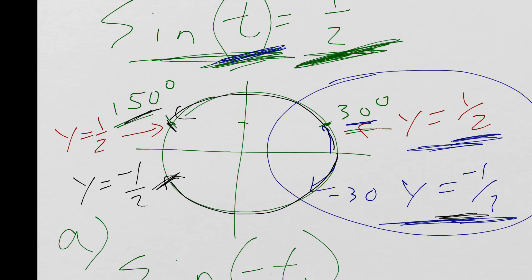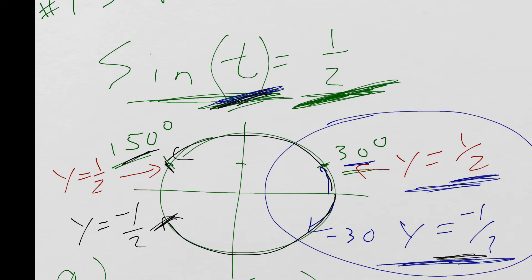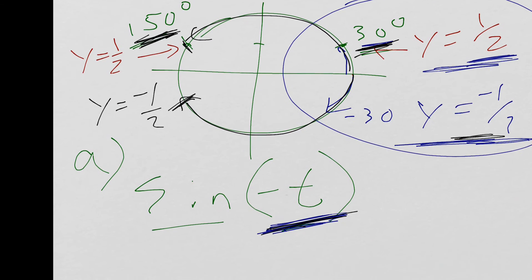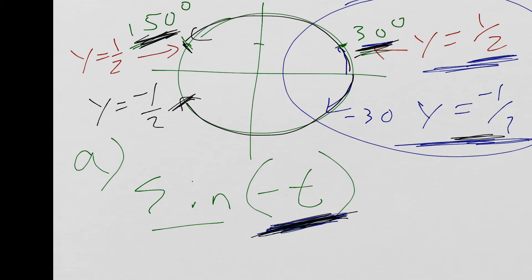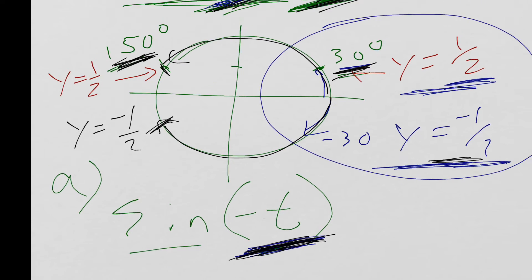So when we started this problem, we didn't know if it was positive 30 degrees or positive 150 degrees. It didn't matter. Both of them had the same 1 half value, right? Now we're switching this problem by saying, okay, well, what happens if I change either of these angles negative?